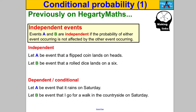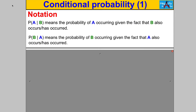In that case, event B — me going for a walk — is dependent or conditional on whether it rains on Saturday. The probability of B occurring is affected by whether A occurs, and that's the type of scenario we're dealing with in conditional probability. We need some notation to use throughout. Here is notation you need to copy down and learn: P(A|B) — you say that as 'the probability of A given B.'